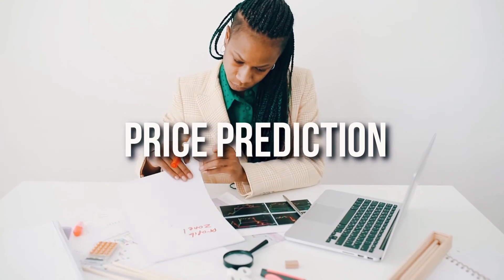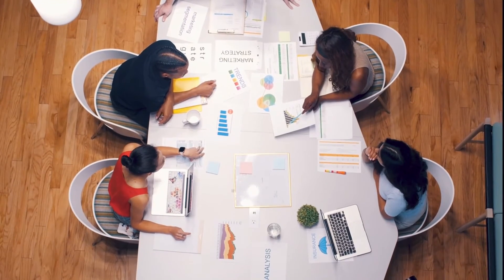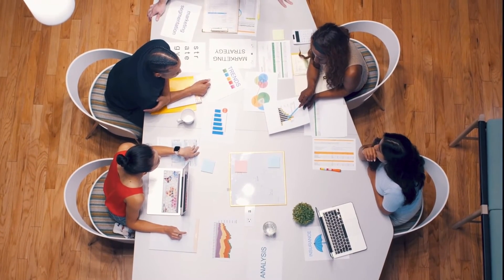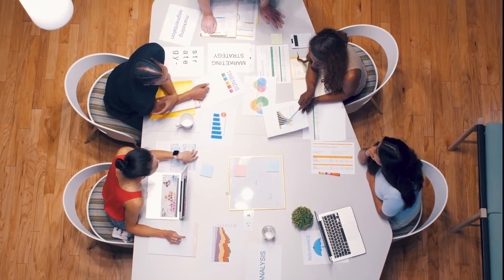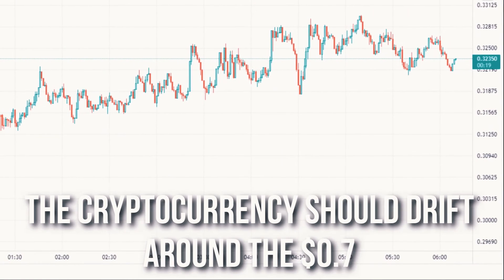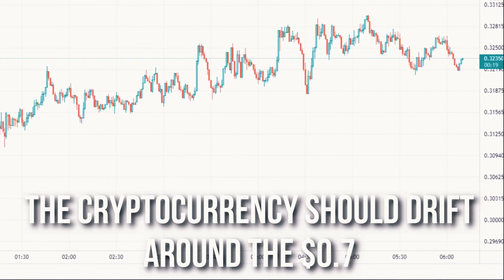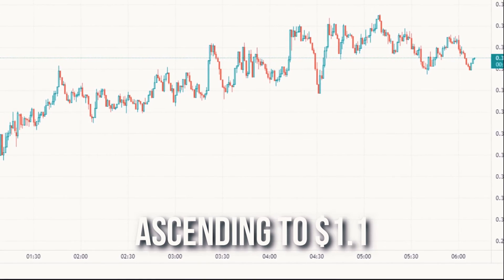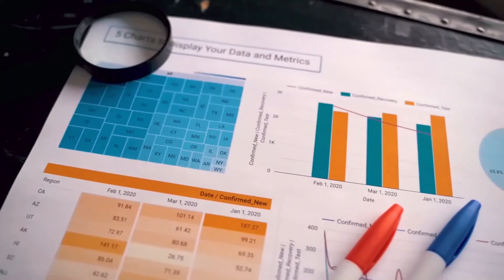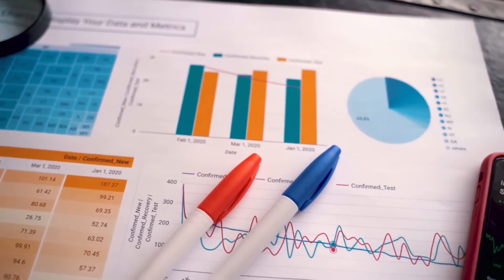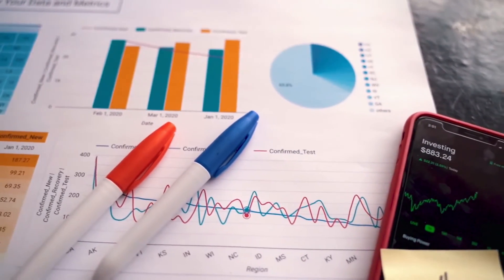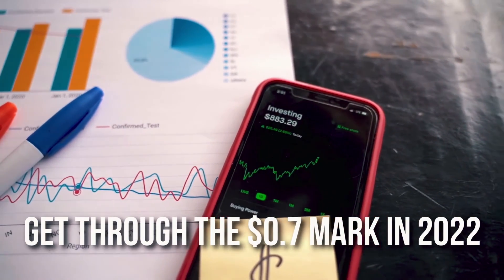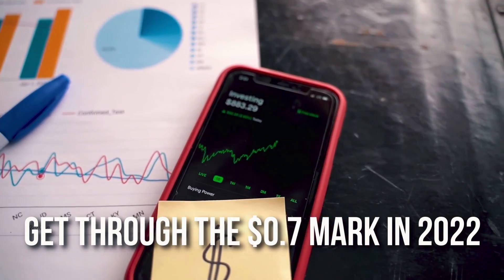Price Prediction 2022. Experts generally foresee a relatively quiet year for HBAR in 2022. Different Hedera Hashgraph price predictions anticipate that the cryptocurrency should drift around the $0.70 mark up until December, when it should experience some moderate growth, ascending to $1.10. Wallet Investor, nonetheless, is undeniably more critical. As indicated by their HBAR price prediction, Hedera Hashgraph price cannot get through the $0.70 mark in 2022.